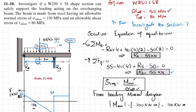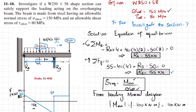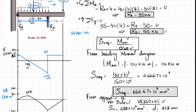Welcome back. Problem 11-10: investigate if a W250×58 shaped section can safely support the loading acting on an overhanging beam. The beam is made of steel with an allowable normal stress of 150 MPa and an allowable shear stress of 80 MPa.